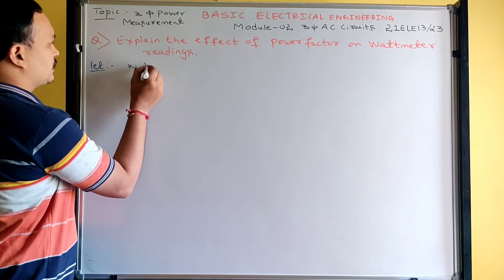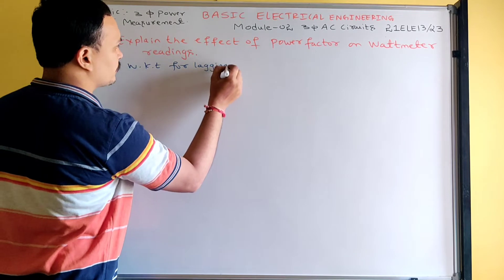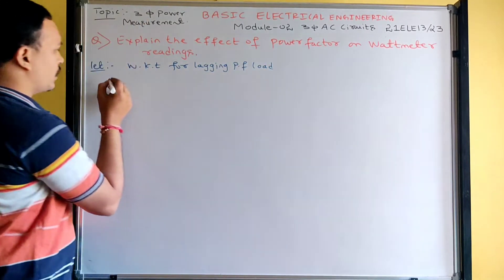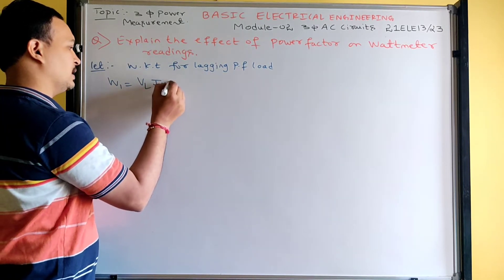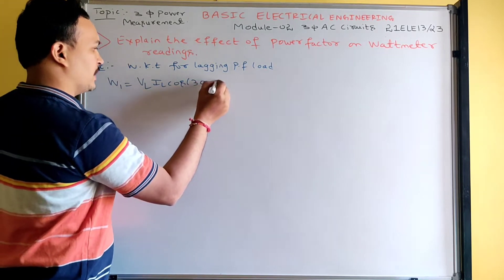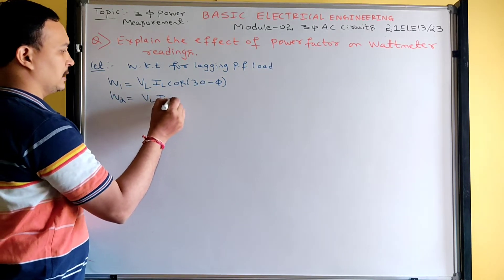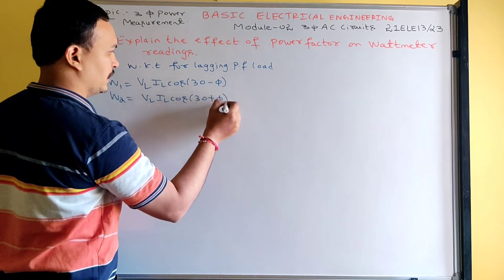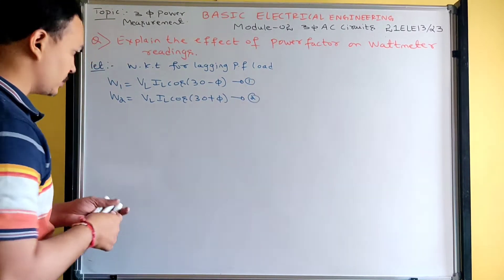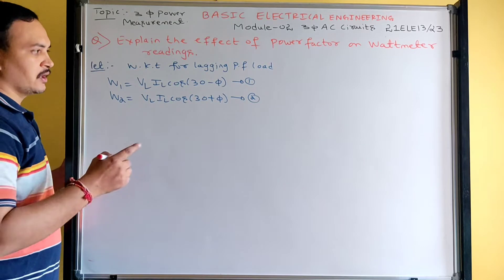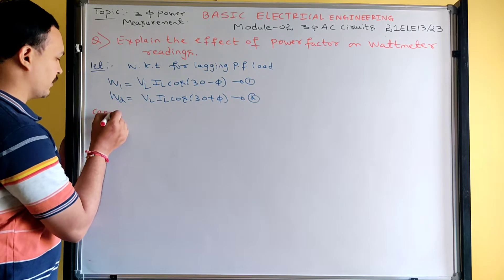We know that for lagging power factor loads, the wattmeter readings are: W1 = VL·IL·cos(30° − φ) — this is equation 1 — and W2 = VL·IL·cos(30° + φ) — this is equation 2. We will now analyze these equations for different power factor conditions to see what happens to the wattmeter readings.